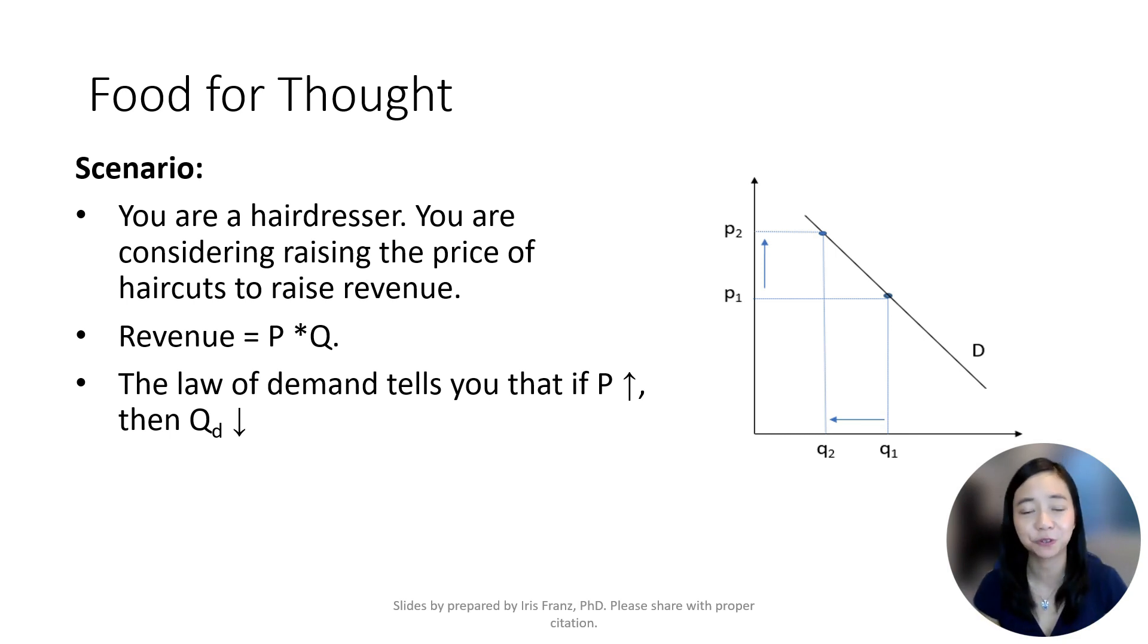Revenue is equal to the price of your haircut times the number of haircuts you perform, or price times quantity. The law of demand tells you that when the price goes up, quantity demanded will go down.